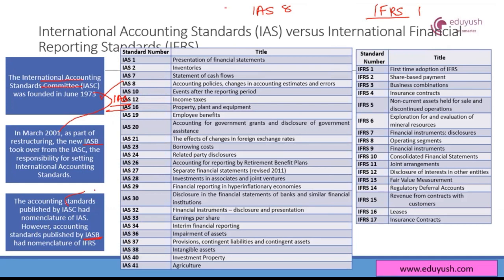When it came to the new standards set by the IASB, they got the nomenclature of IFRS 1, 2, 3, 4 till 17. These IFRS standards replaced some of the old standards that had the IAS name. When a replacement happened, naturally IAS went away and IFRS came into being.